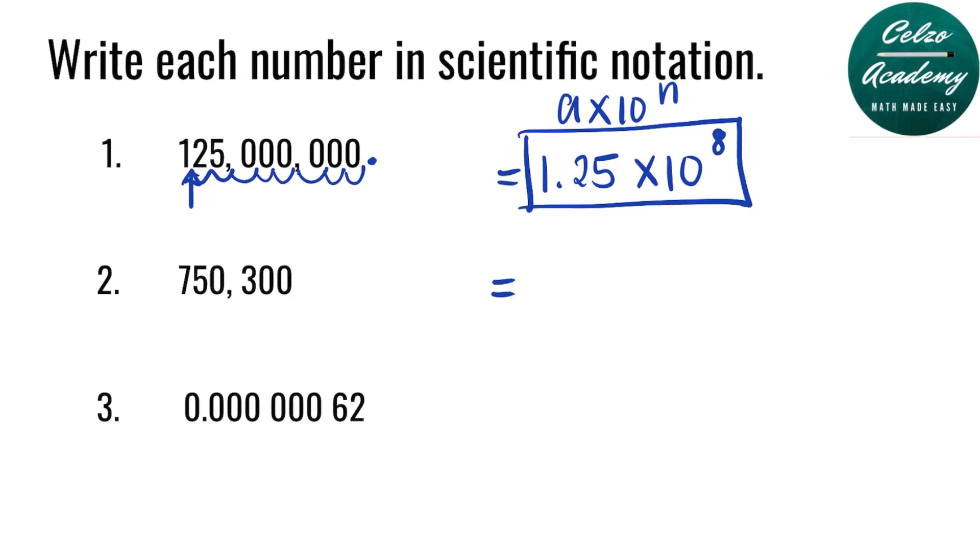Question number 2. We have 750,300. It's a whole number, so the decimal point is on the right side. So now we will place the decimal point right after the 7. That way, our a value is 7.503. Then we have times 10 to the power of n. What do you think is the power of n here? We have 1, 2, 3, 4, 5. So we have times 10 to the 5th power.